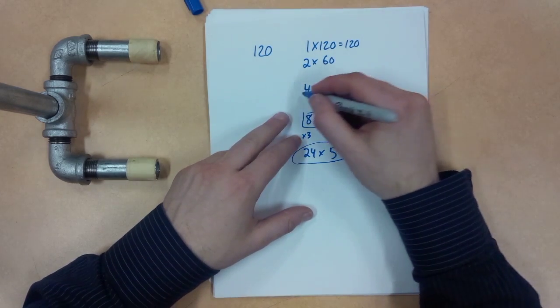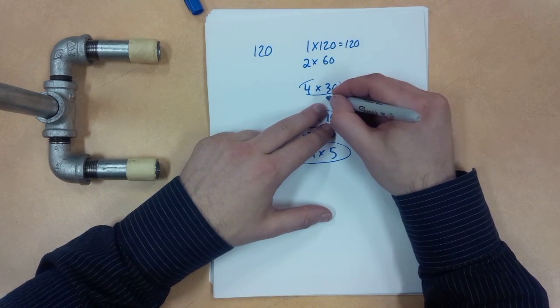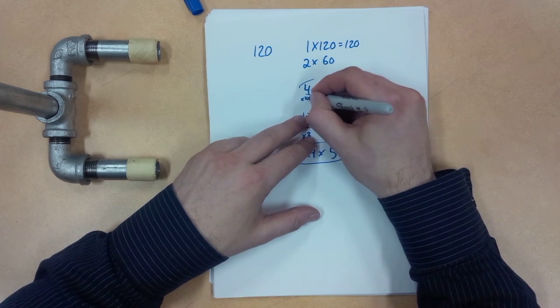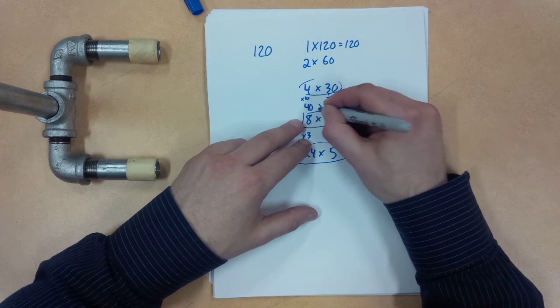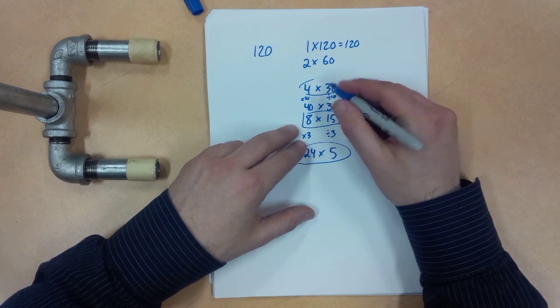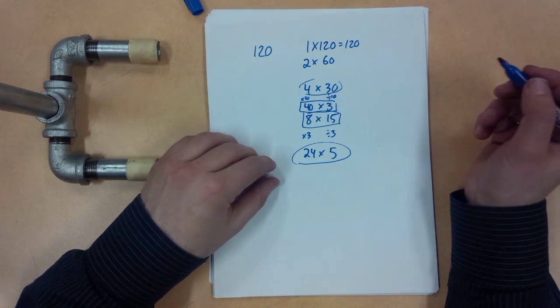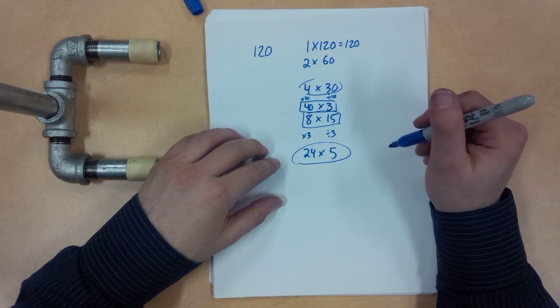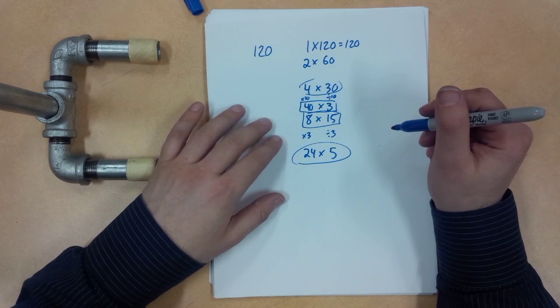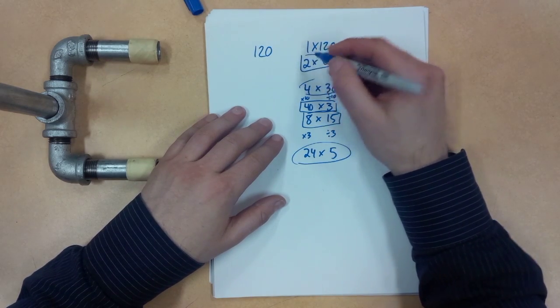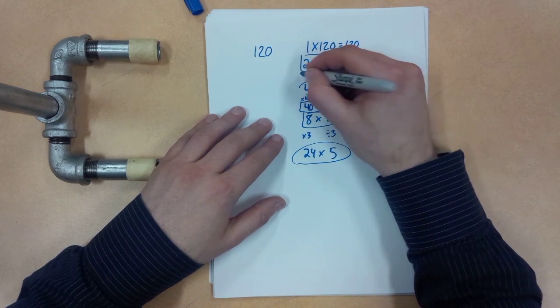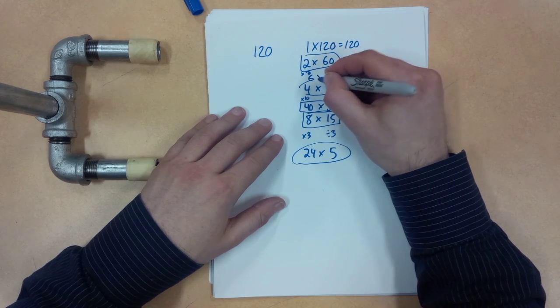What about taking this one here? I could divide by 10 and times by 10. I've got 40 and 3 are also factors. Wow, look at that. Let's see, 5, 6. What else can we do here? Oh, how about this? I could take this and I could divide this by 3 and triple this one and get 6 times 20.